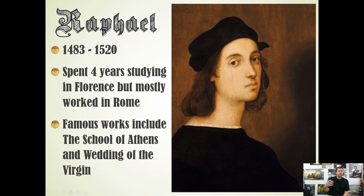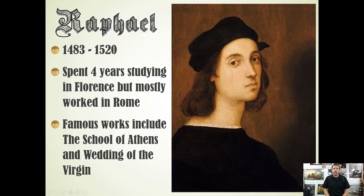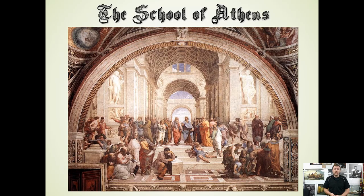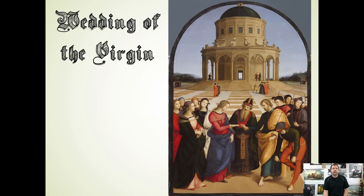Michelangelo and da Vinci were around the same time period. The next artist, a younger one, was named Raphael. He learned from studying da Vinci and Michelangelo, taking in their new techniques. He then advanced the idea of realism in his paintings — his paintings appeared so lifelike. That was one thing he really pushed the boundaries on: realism.